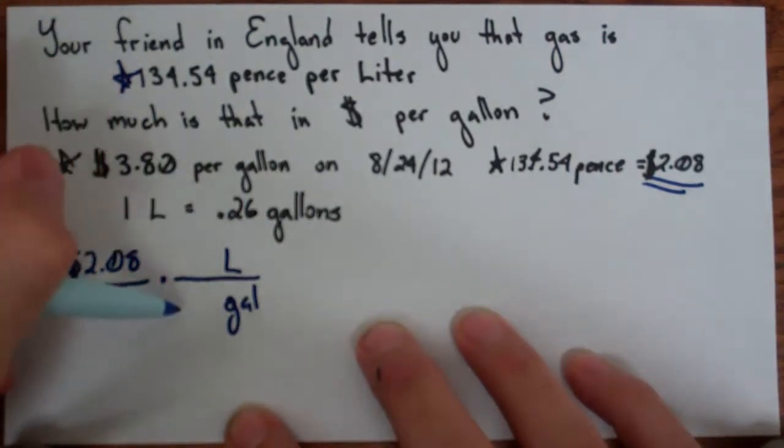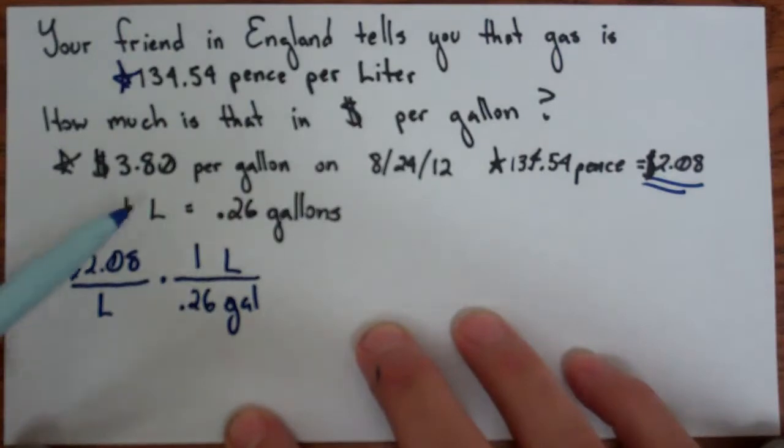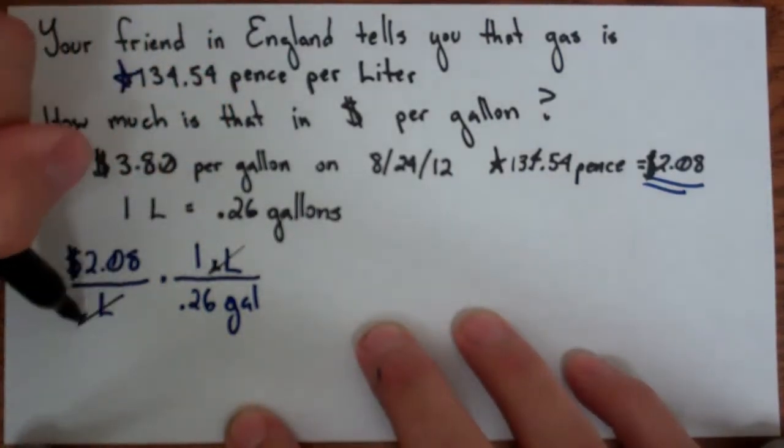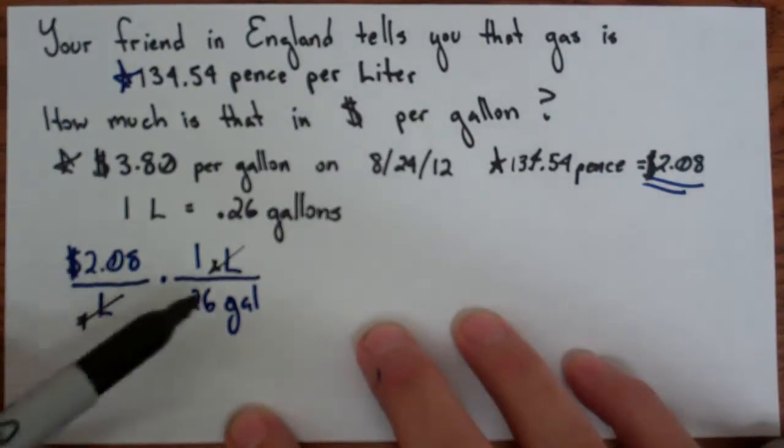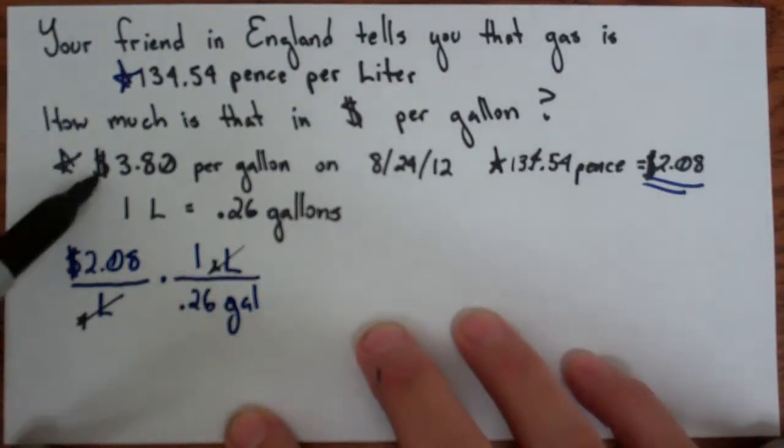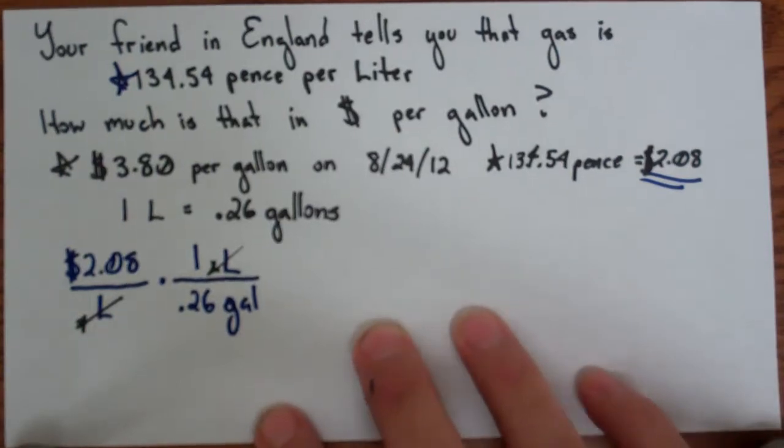Well the conversion then is gallons is 0.26 and the liters is 1. So you'll see that the 1 goes with the liters on the top and the gallons goes on the bottom. And the reason we wanted to do that is so that the liters reduce out and now leaves me in dollars per gallon, which is what I want. I want to be able to compare this to the current price here.